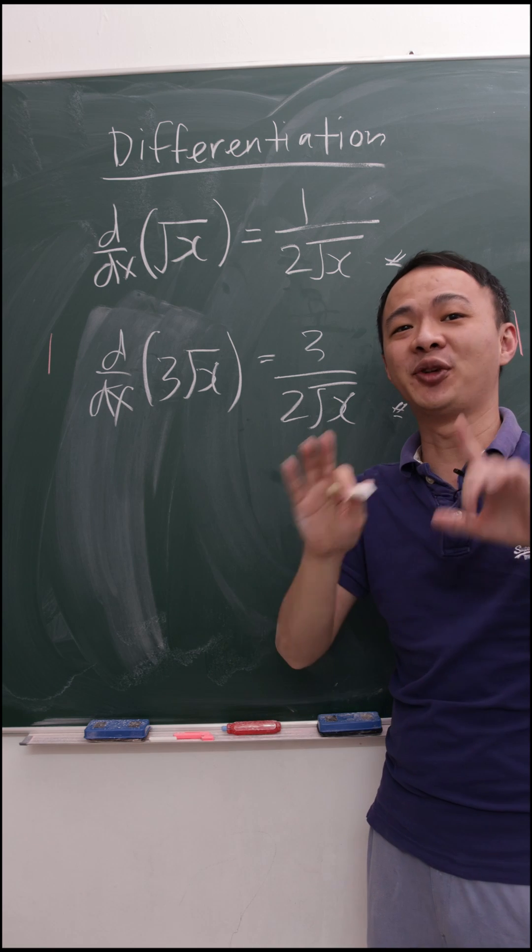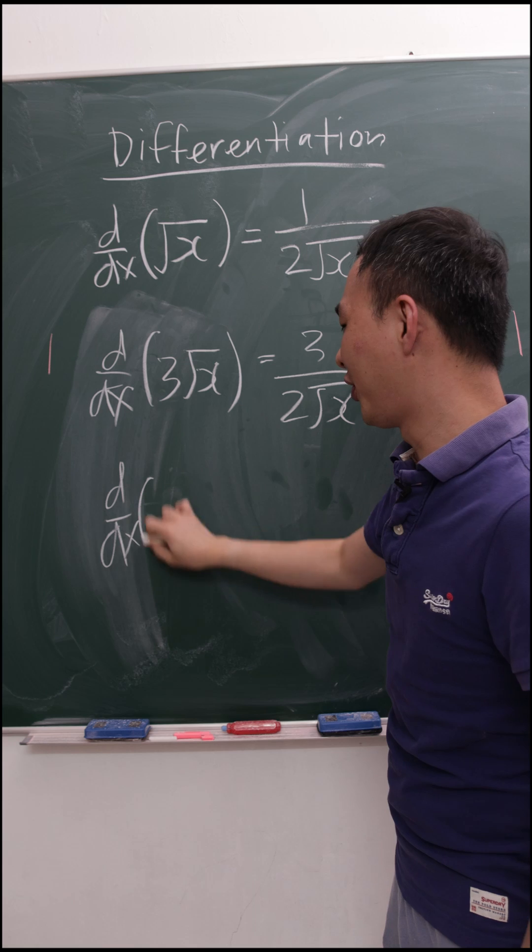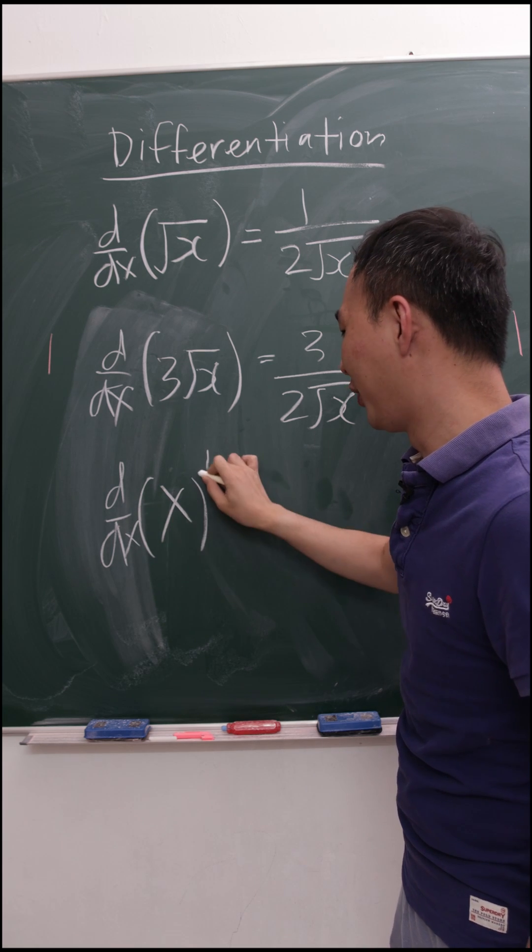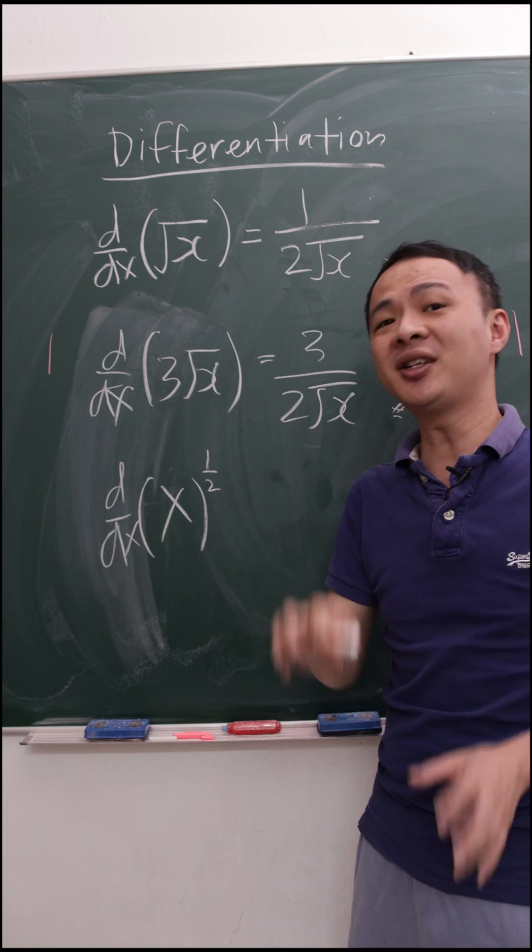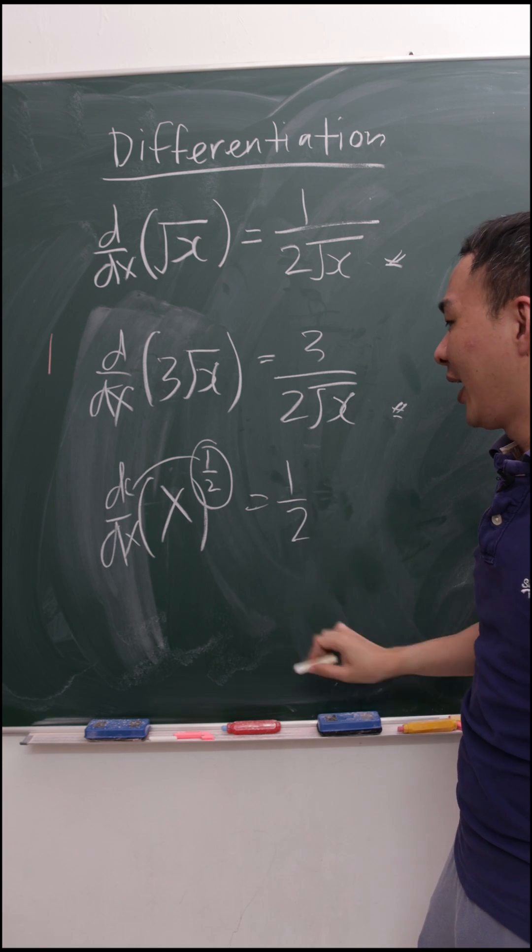Of course, I will explain the theory behind it. If I differentiate square root x, what is the power for square root x? It's x power of 1 over 2. In differentiation, this is how we work. We move the power to the front which is 1 over 2, and then this power here...